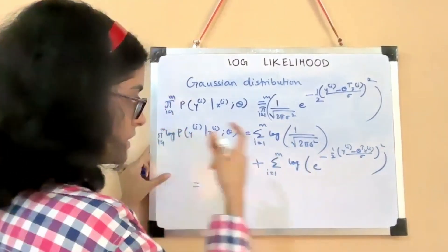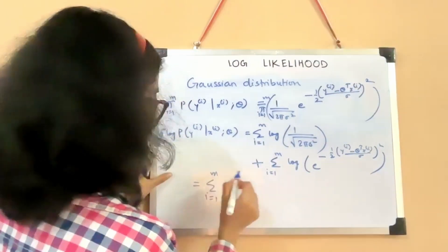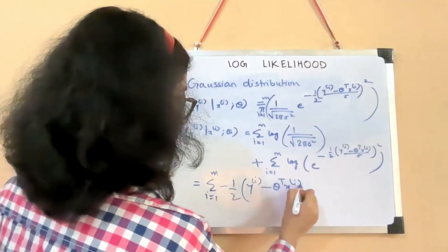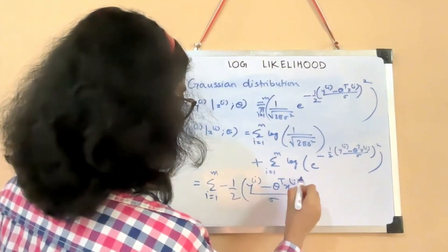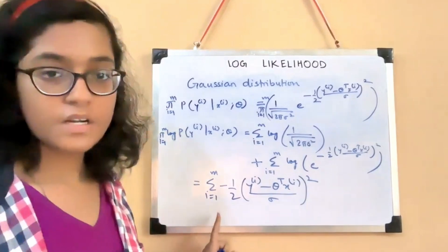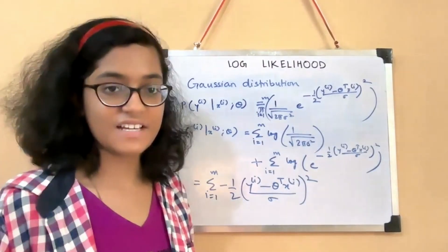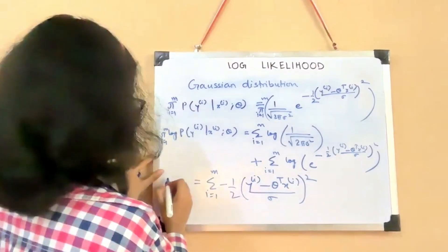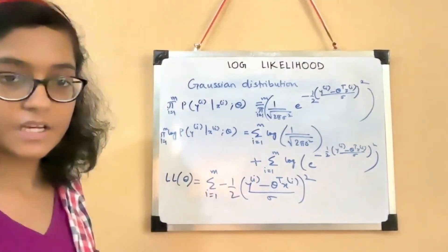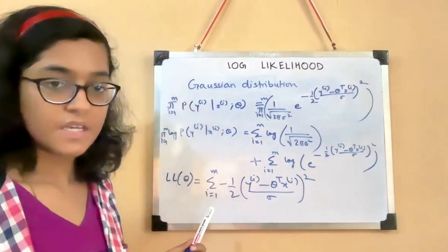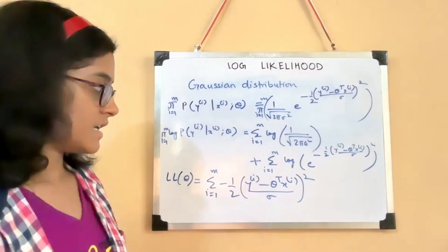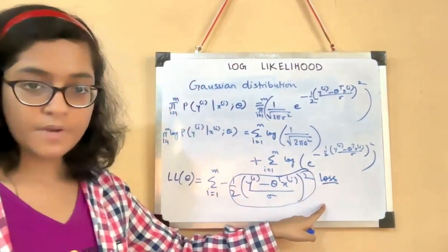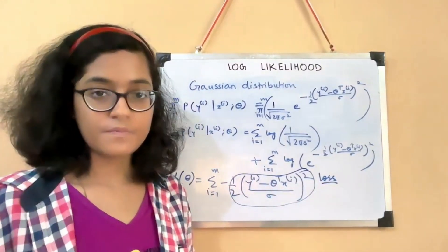If you bring the log inside, you will soon see that the result looks very familiar — it's the least squares function. This is the log likelihood function, and this is what we try to maximize. Because of the minus sign, maximizing the log likelihood means minimizing the loss — which is the least squares loss from linear regression. So you see, the linear regression loss comes directly from the maximum likelihood framework. That is why likelihood matters so much, and in all models, you will always try to maximize the log likelihood.